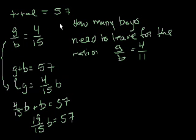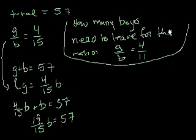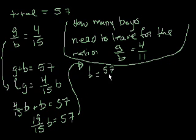Let me clean this up a little bit. And then we say b is equal to 57 times 15, all of that over 19, right? I just multiplied both sides by 15 over 19. So 57 divided by 19 is 3. So b is equal to 45.